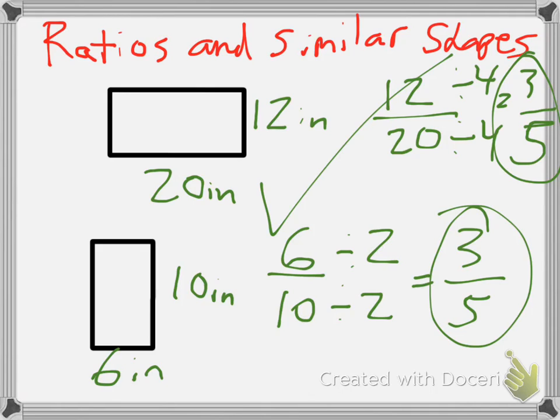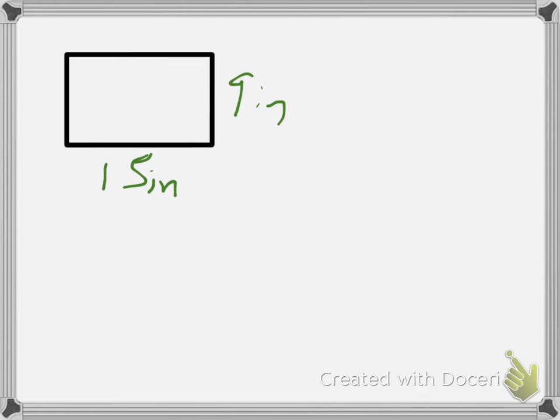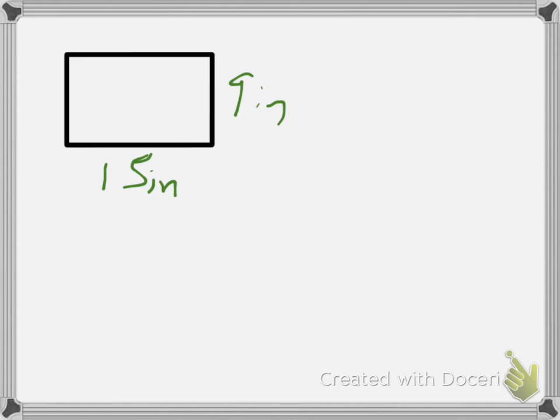Let's look at another example of this with a couple of different shapes. In this case, let's have a shape that's 9 inches on one side and 15 inches on the other side. I'm going to create a ratio and I can put either number on top or bottom.